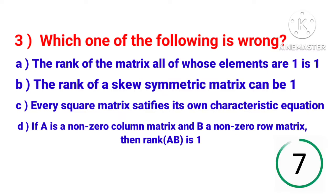elements are one is one. The rank of a skew symmetric matrix can be one. Every square matrix satisfies its own characteristic equation. If A is a non-zero column matrix and B is a non-zero row matrix, then rank of AB is one.